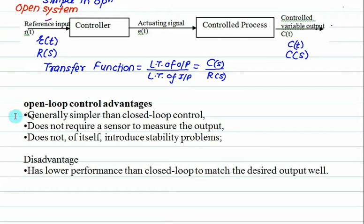The advantages of open loop system: they are very simple, this arrangement is very simple compared to closed loop. They do not require any type of sensor, which is very costly, and they have no stability problem. The major disadvantage is lower performance compared to closed loop.